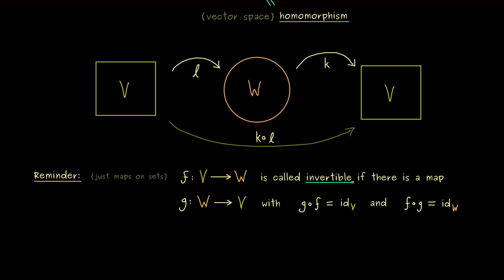So this is what we mean by an invertible map on the set level. And you already know, this g here is uniquely determined.